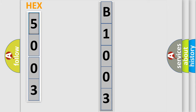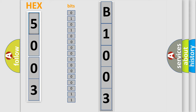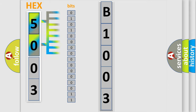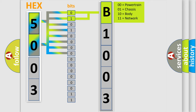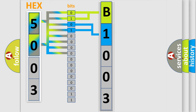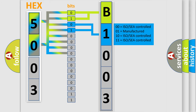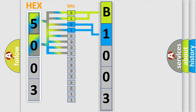The error code is split into two bytes consisting of 16 bits. One bit is the basic unit that each computer works with. The bit has two logical states: zero, low level, and one, high level. By combining the first two bits, the basic character of the error code is expressed. The next two bits determine the second character. The last four bits of the first byte define the third character of the code.